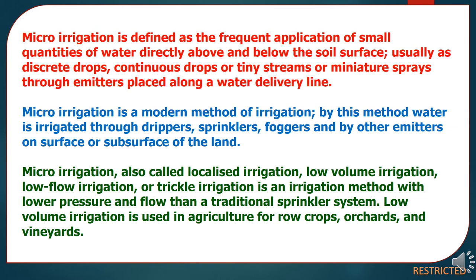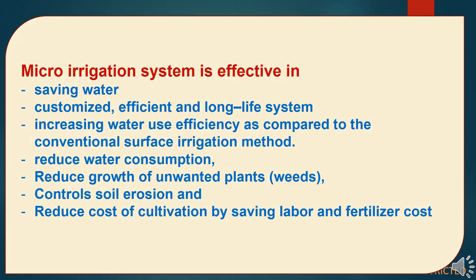Low-Volume Irrigation is used in agriculture for row crops, orchards, and vineyards. Micro-Irrigation system is effective in saving water, is a customized, efficient, and long-life system, increasing water use efficiency as compared to conventional surface irrigation methods, reducing water consumption, reducing growth of unwanted plants and weeds, controlling soil erosion, and reducing cost of cultivation by saving on labor and fertilizer costs.